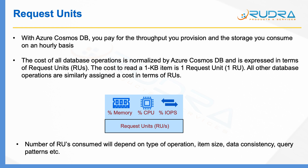You need to estimate how many request units you require based on the size of your items, the kinds of operations you perform, and the consistency you choose. What I would suggest from my experience is: create a Cosmos DB container, load around 1,000 items, do some operations on it, and see how the request unit consumption looks. The type of operations during testing should closely match real-world usage. With one simulated user over a few hours, observe how many request units are consumed, then multiply by the number of concurrent users to estimate your total throughput requirement.